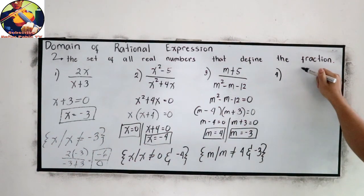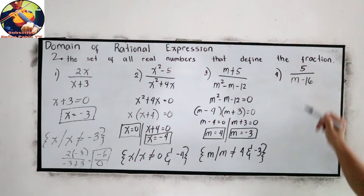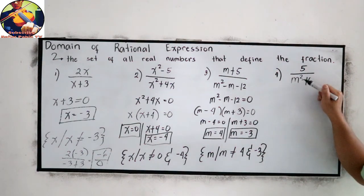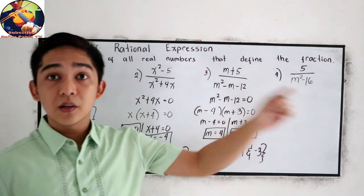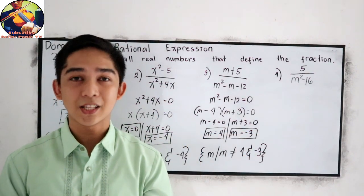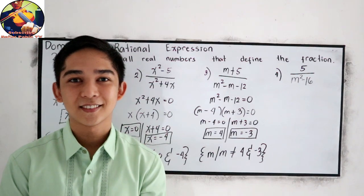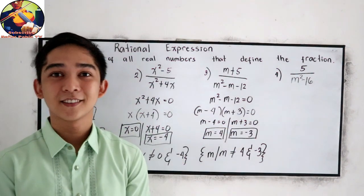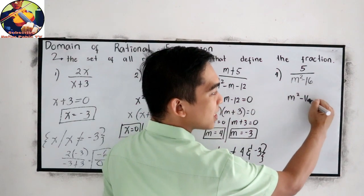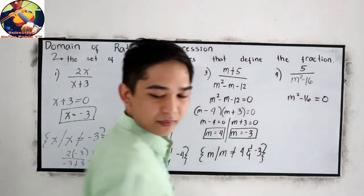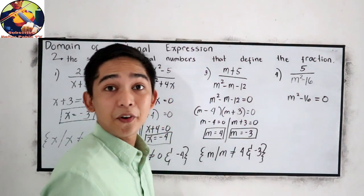Let's try our last example. Number 4: 5 over m squared minus 16. If you want to try number 4, you can pause the video. And after answering, you can resume watching to check your work. Now let's check number 4. Copy our denominator: m squared minus 16, equate to 0.